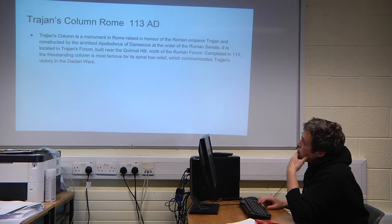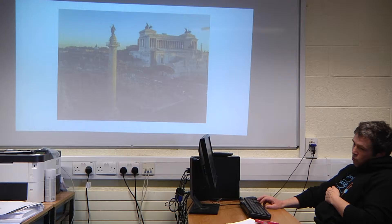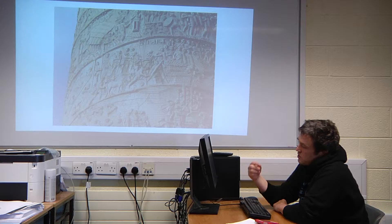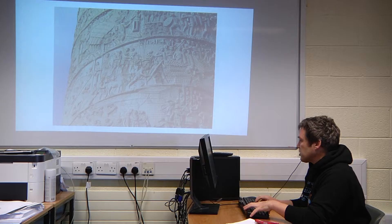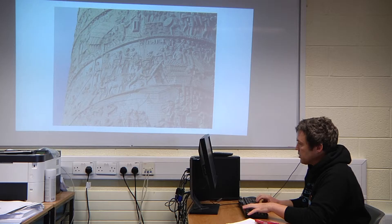In Rome, there's a column called Trajan's Column from 130 AD. There are vast reliefs showing the war of Damascus, and when you follow it around it shows the whole event. It's primitive but very well done — if you're ever in Rome, it's worth the visit.